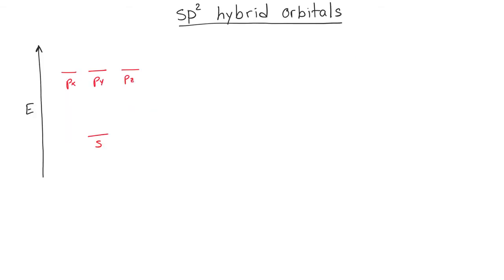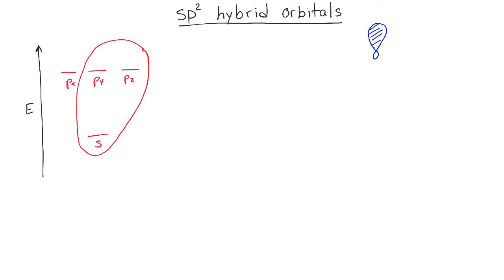When one of the s orbitals and two of the p orbitals combine to hybridize, we get what are known as sp2 hybrid orbitals. sp2 hybrid orbitals have the same shape as sp3 hybrid orbitals — they have a large lobe and a small nub — but there are only three of them produced. So once the hybridization has taken place, we get three sp2 hybrid orbitals.